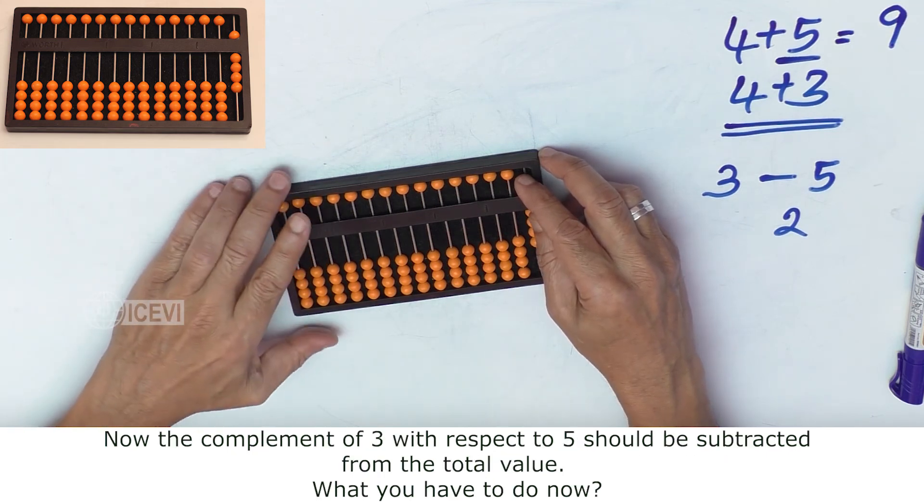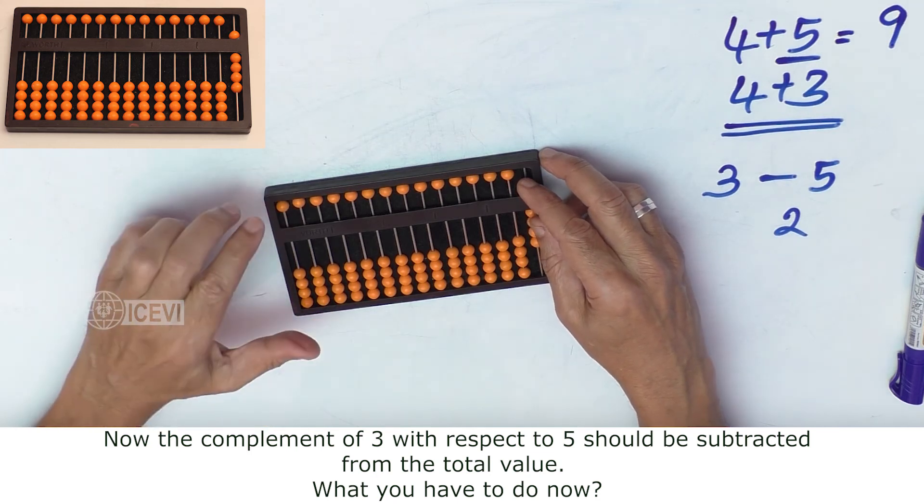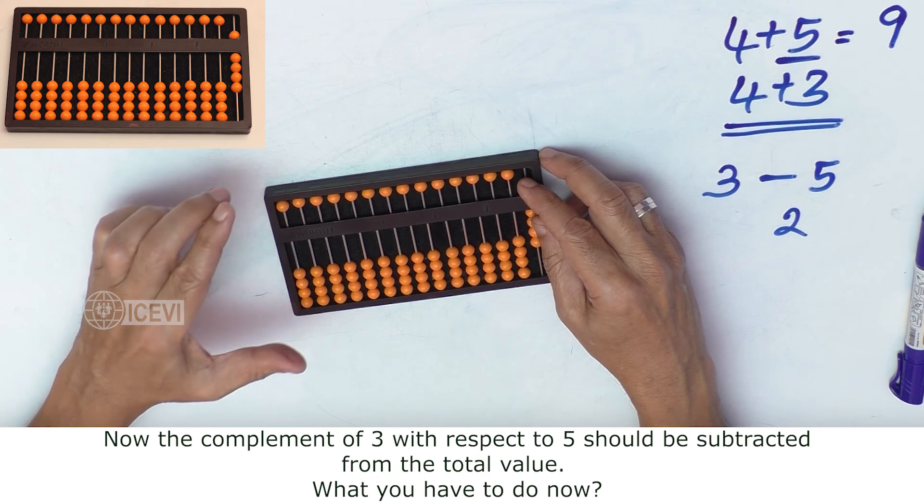Now the complement of 3 with respect to 5 should be subtracted from the total value. What you have to do now?